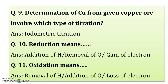Determination of copper from the given copper ore involves which type of titration? This is experiment number 2. Here you are determining copper from its copper ore, so it is the iodometric titration. Here you use the starch indicator. Iodine is evolved when you add KI — that time yellowish brown color appears, indicating iodine is evolved. That evolved iodine is titrated using sodium thiosulfate with starch as an indicator.